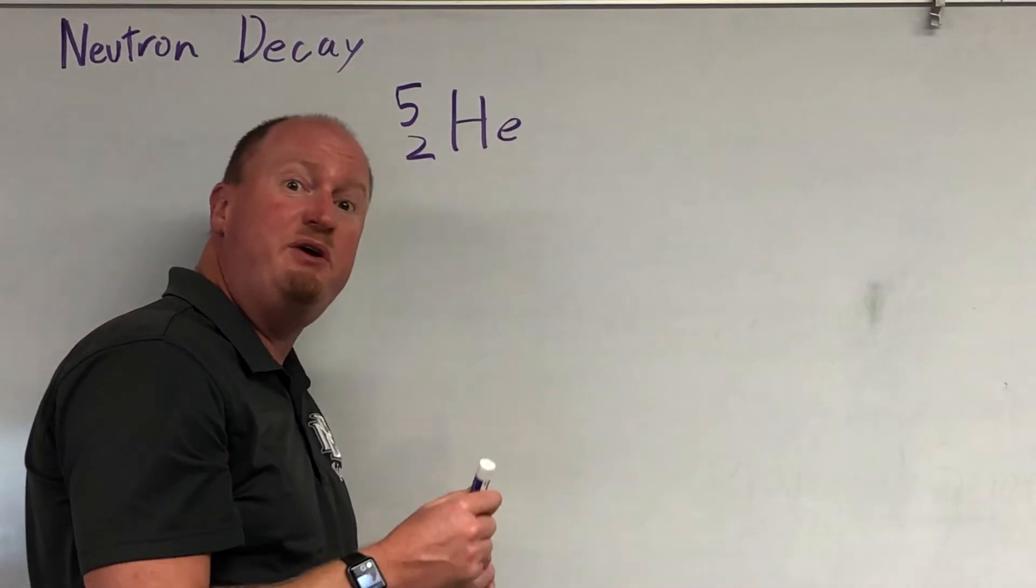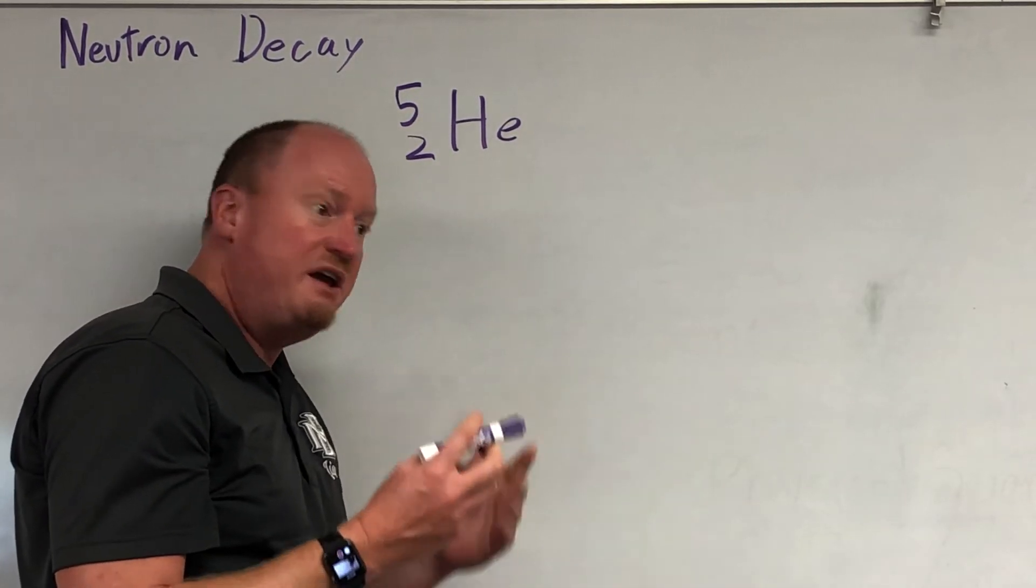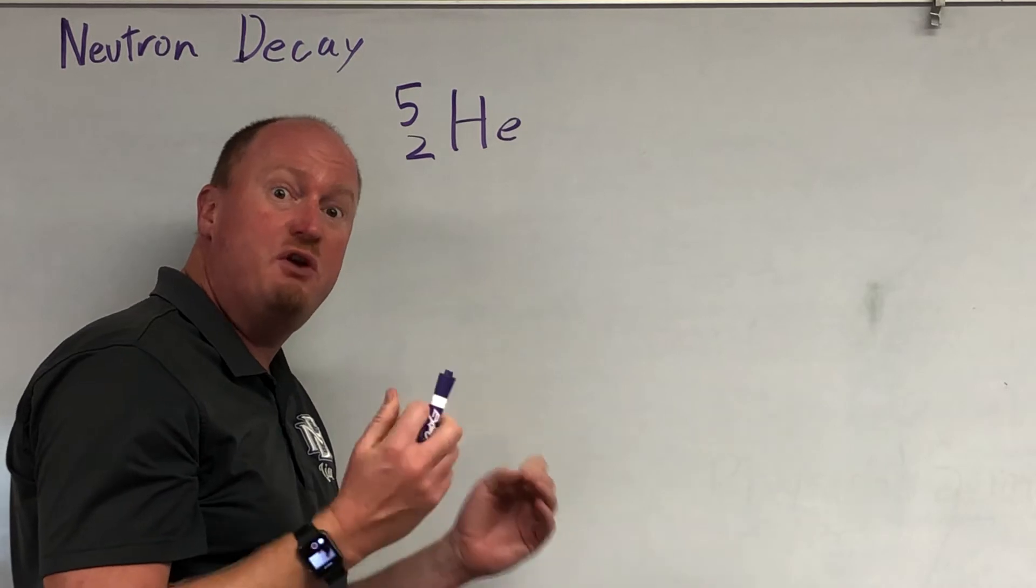So here's an example. We have helium-5. Now, helium-5 is very unstable. It's going to want to decay.